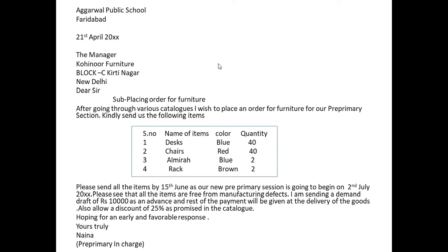In the table: desks — color blue, quantity 40; chairs — color red, quantity 40, since these are for small kids we can make it colorful; Elmira — color blue, quantity 2; and racks to keep differences — color brown, quantity 2.